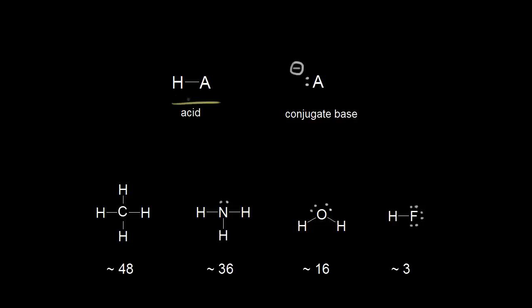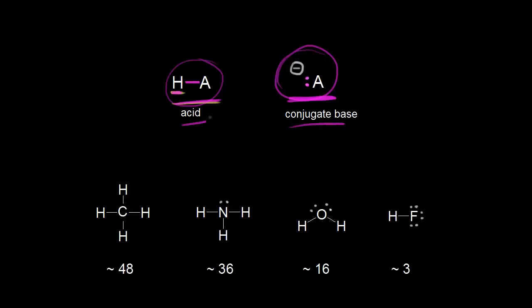If HA is a generic acid and donates this proton, the electrons in this bond — the electrons in magenta — are left behind on A to form A minus. So A minus is the conjugate base to HA. If A minus is stable, then HA is more likely to donate this proton. Therefore, if you want to determine the acidity of a compound, you can look at the stability of the conjugate base. The more stable the conjugate base, the more likely the acid is to donate a proton.